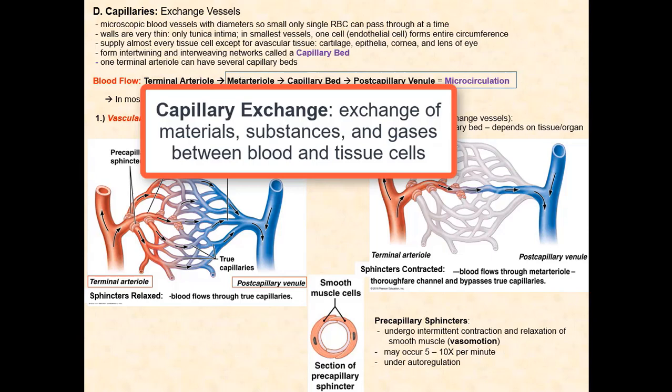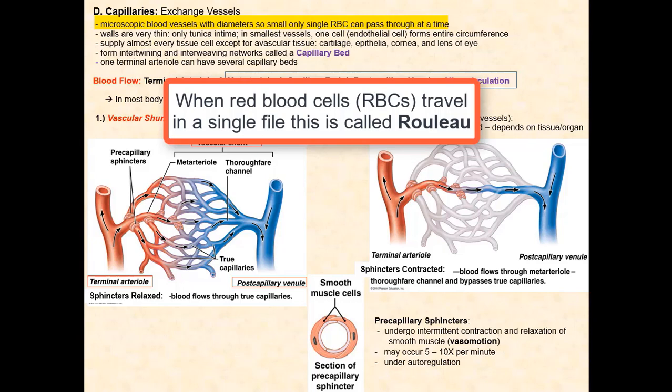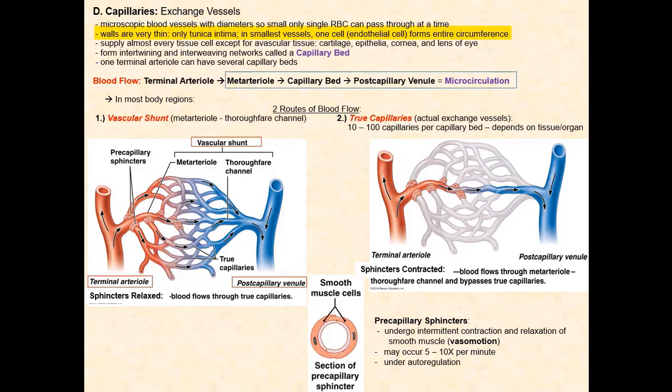This is referred to as capillary exchange. These capillaries are microscopic blood vessels with a diameter so small that red blood cells must travel in a single file to fit in their lumens. Their walls are extremely thin, which only consist of the tunica intima or interna. This thinness is absolutely necessary if the exchange of materials, substances, and gases is to occur. Almost every tissue and their cells are directly supplied by at least one capillary bed.